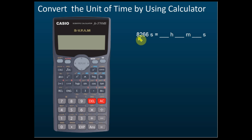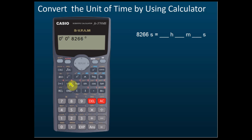For example, if you want to know what 8266 seconds equals in hours, minutes, and seconds — in your calculator, seconds is the last entry. So you key in 0 degrees, then 0 minutes, then 8266 seconds. We don't have minutes or degrees, only seconds, so we press 0 degrees, 0 minutes, and 8266 seconds.